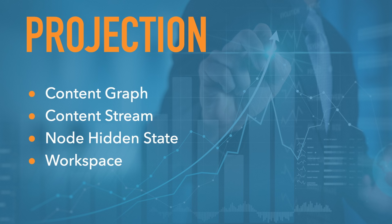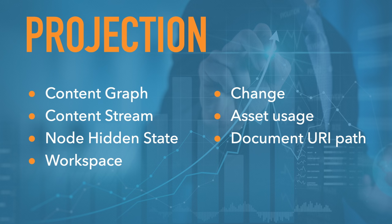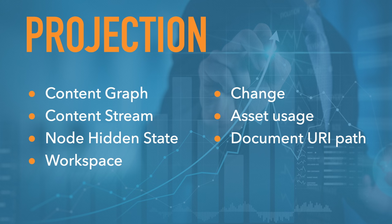The new content repository will come with four projections out of the box — most importantly the content graph projection. Neos will add three additional ones: the change projection keeps track of unpublished changes in a workspace so we can render that orange or green publish button. The asset usage projection allows us to performantly tell whether an asset is used in the content repository and where, so we don't accidentally delete it. And the document URI path projection is used for routing.